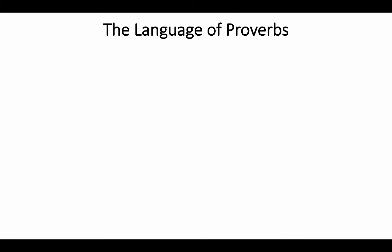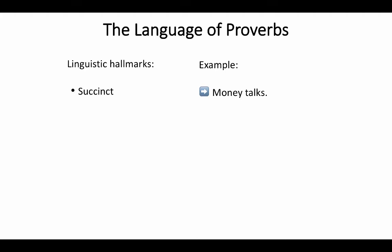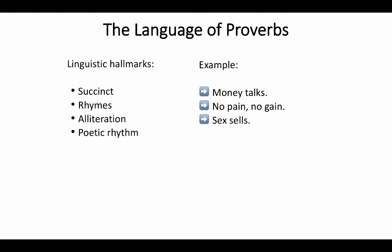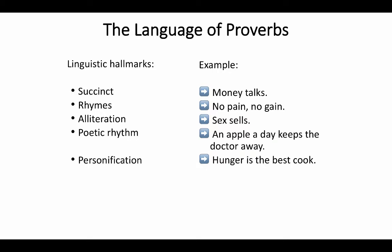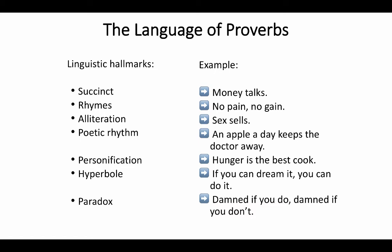What about the language of proverbs? Proverbs share linguistic hallmarks—language features that make them sound like a proverb. These include being succinct (they're short), they often rhyme, they have alliteration, a poetic rhythm, personification, hyperbole or exaggeration, and they often show a paradox. We could add one more: it sounds like a proverb—in formulations like 'where there's X, there's Y,' or 'no X, no Y,' or 'he who X's is Y.'